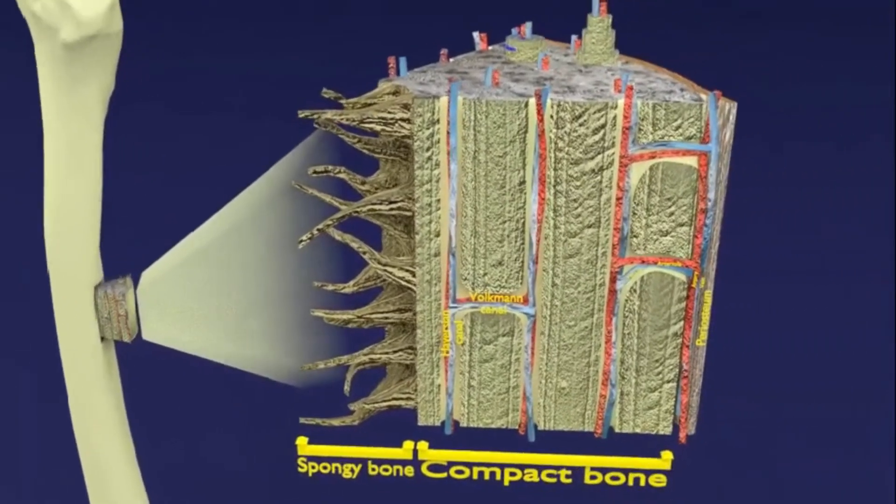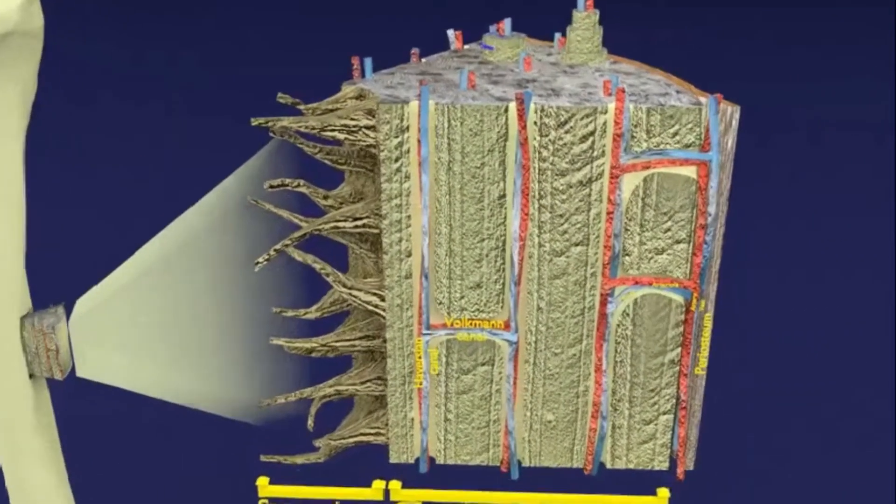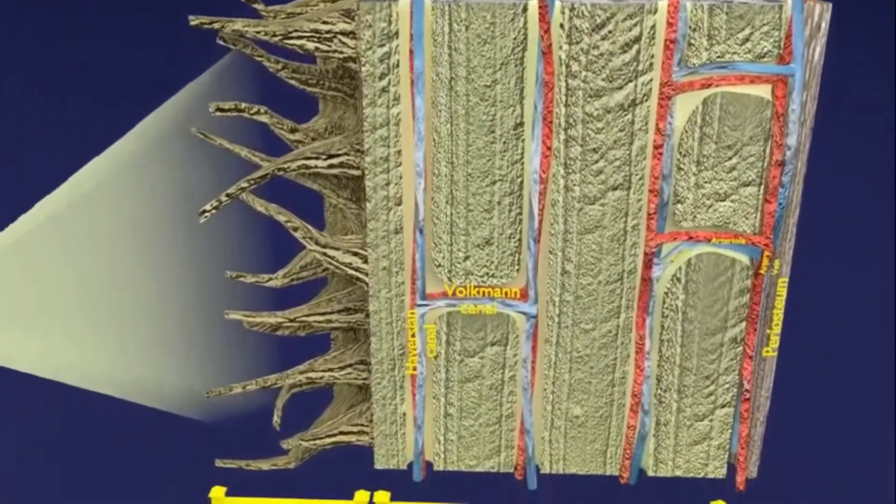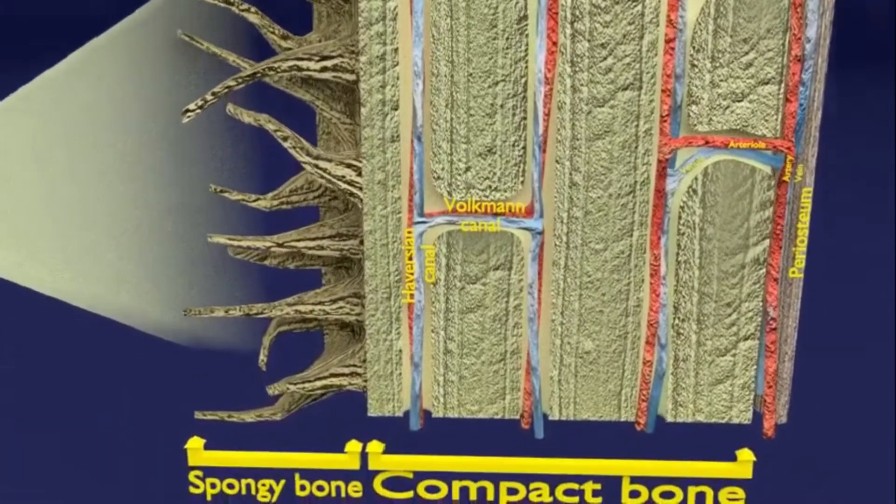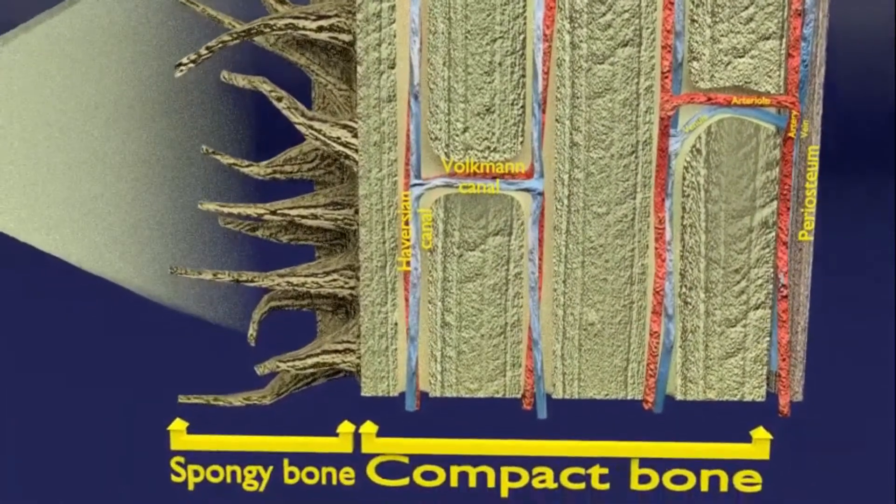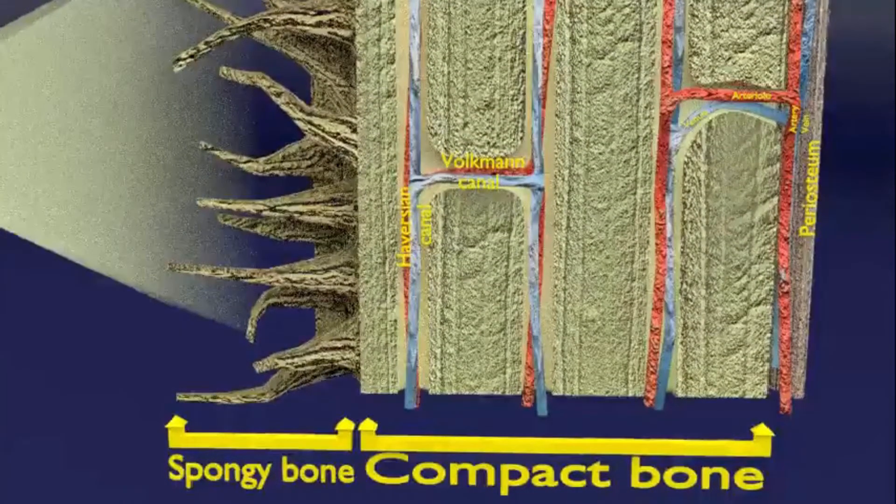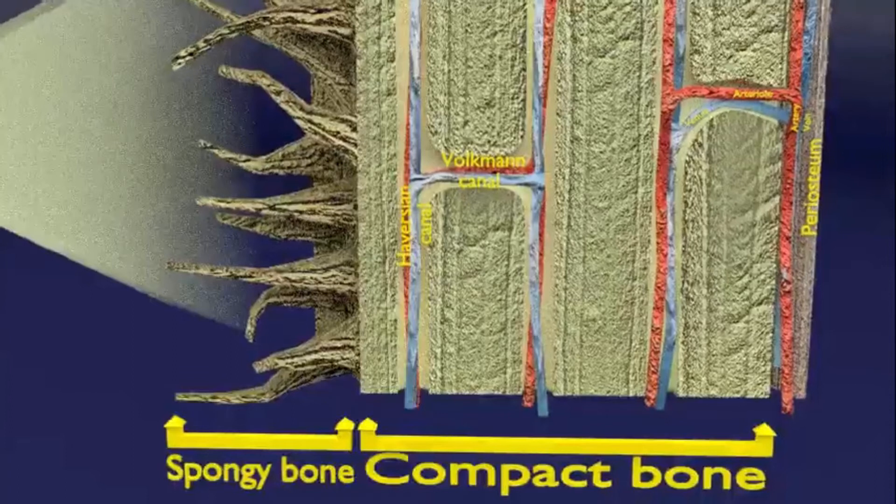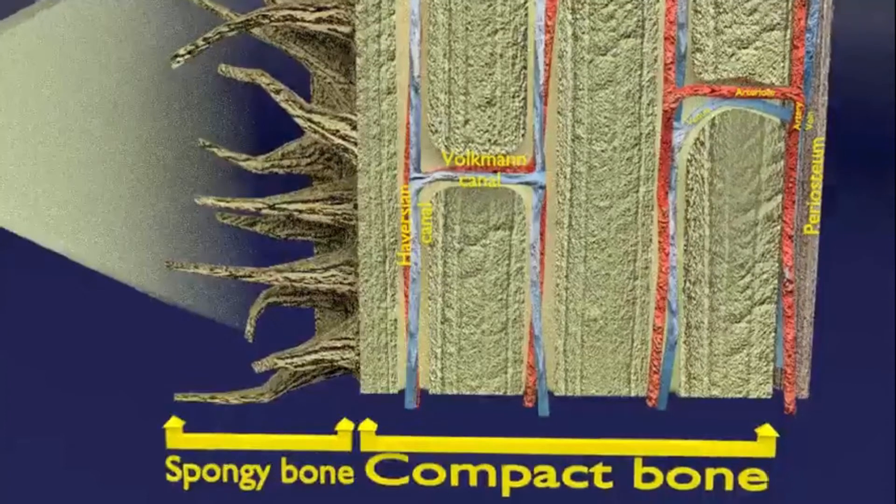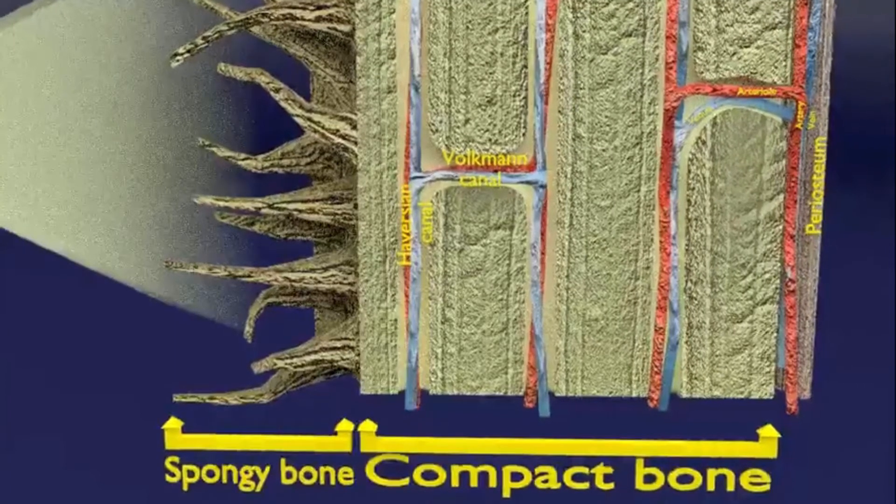The inner portion is formed by the spongy bone that is also known as cancellous bone and surrounds the innermost bone marrow. There are trabeculae and cavities present that increase the surface area of the bone to almost ten times that of compact bone as seen in the animation.